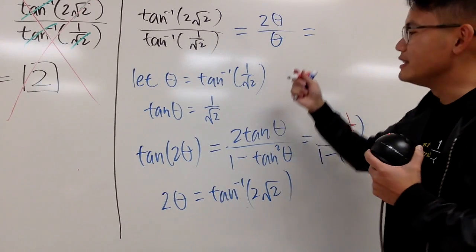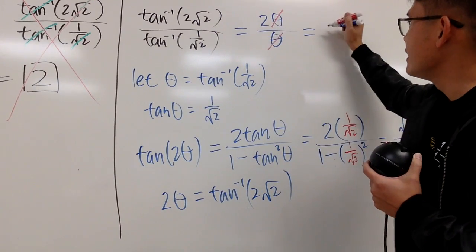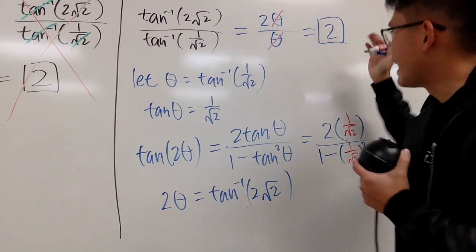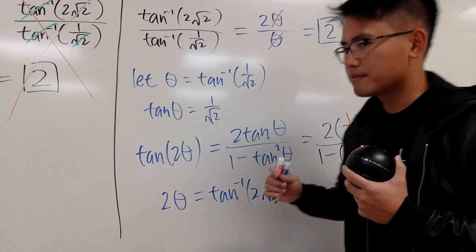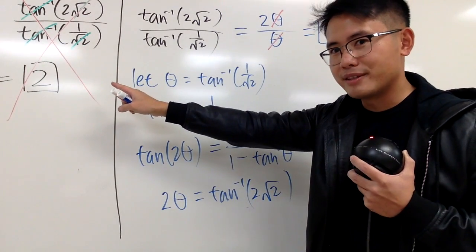And, now, we see that we can cancel the θ, and then, in the end, our answer is 2, like this. But, I think I like that way better.